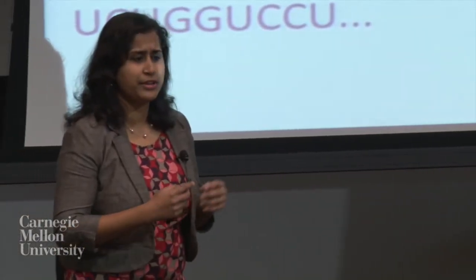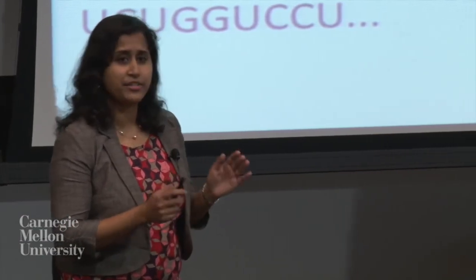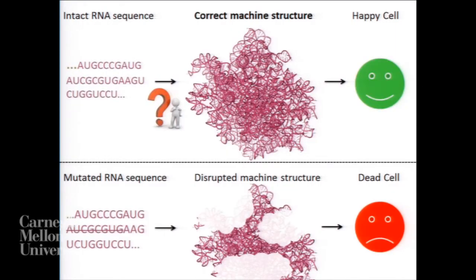We understand very little about how cells actually build these machines at the molecular level, and that's where my lab's research comes in. So what do we know? Where does the field stand right now? We know that the raw material to make these machines is RNA. RNA is exactly like DNA in that it carries genetic information and is made up of a sequence of four letters, but it differs from DNA in that it can form more complex, more intricate structures.